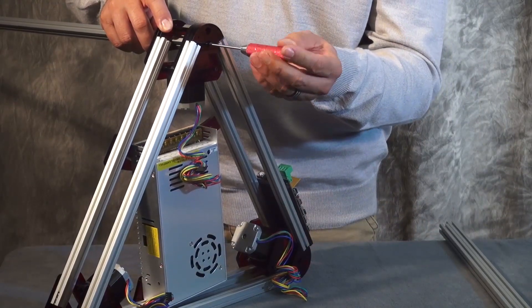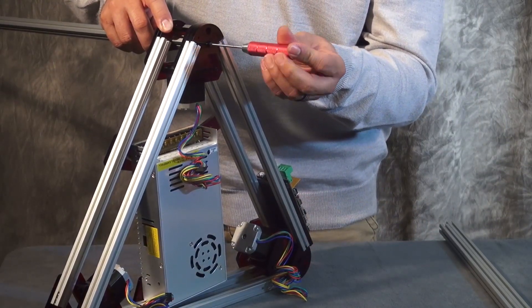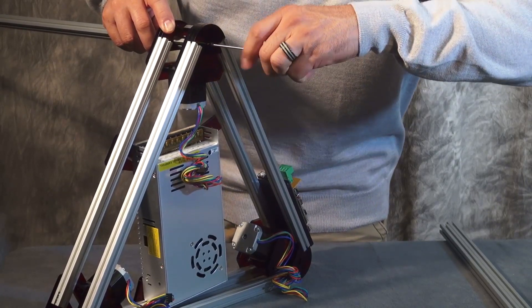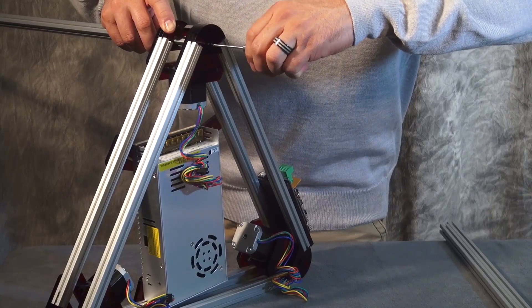Using your M3 20mm screw, you feed it through the bottom hole and it will attach directly onto your aluminum post. You will want to repeat this for all three posts.